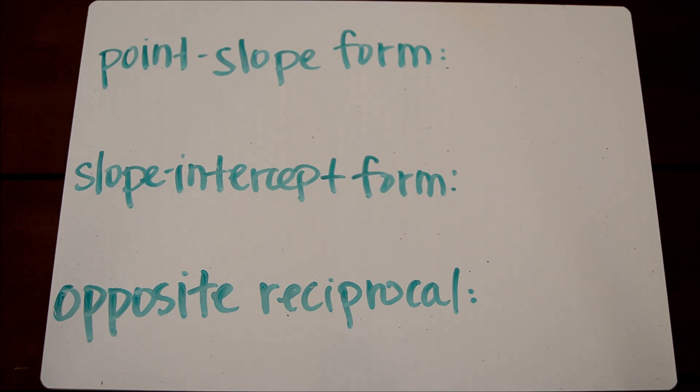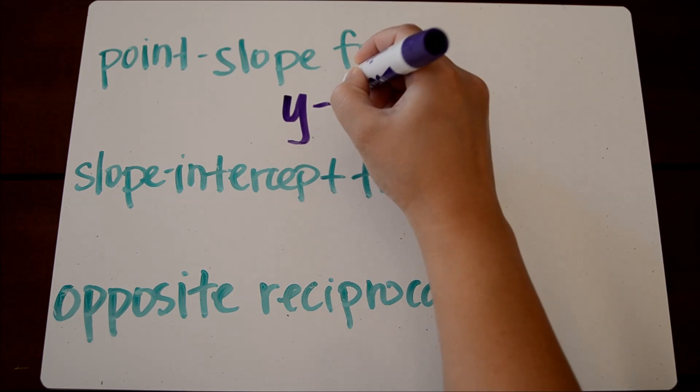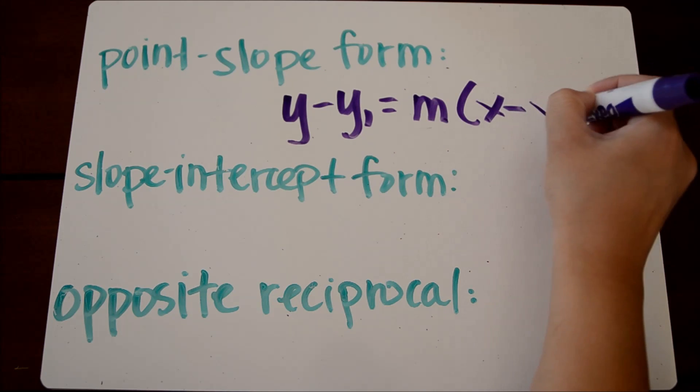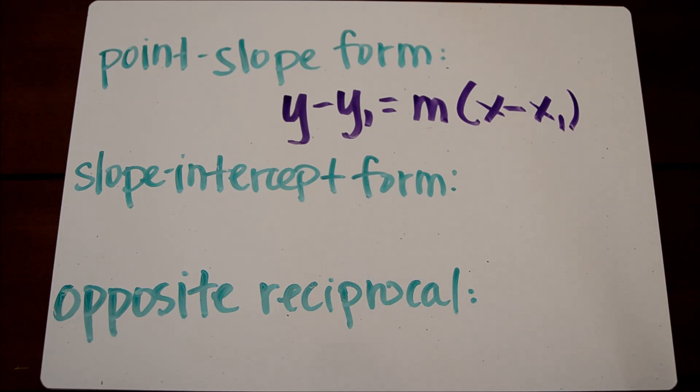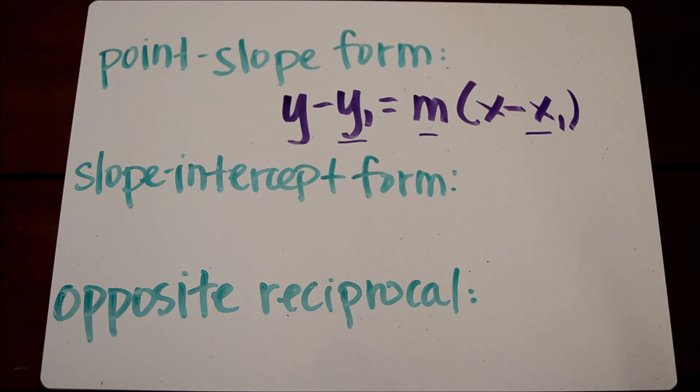First, point-slope form. Point-slope form of an equation is y minus y1 equals m times x minus x1. And with this form, we will substitute values in for y1, m, and x1.